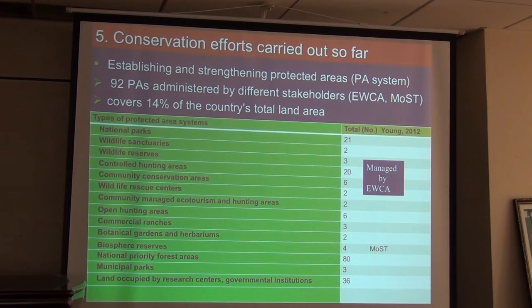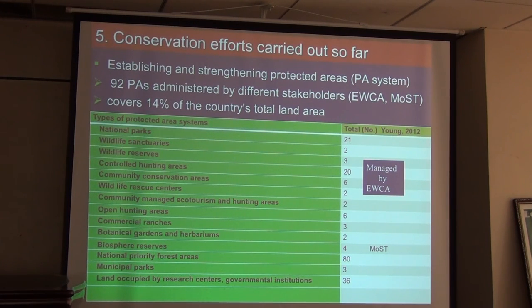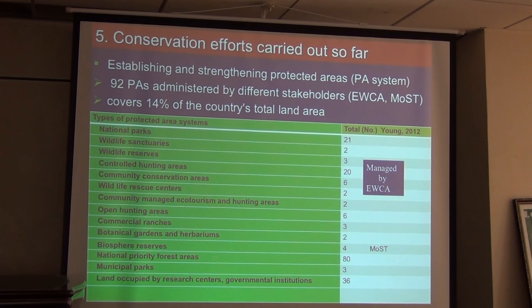Another in-situ conservation activity is the protected area system — we have 92 protected areas administered by different stakeholders, primarily by EWCA, the Ethiopian Wildlife Conservation Authority. We also have four biosphere reserves, whose concept is that people and wildlife can live together — administered by the Ministry of Science and Technology. In total, the protected area system covers 40% of the country's land area.